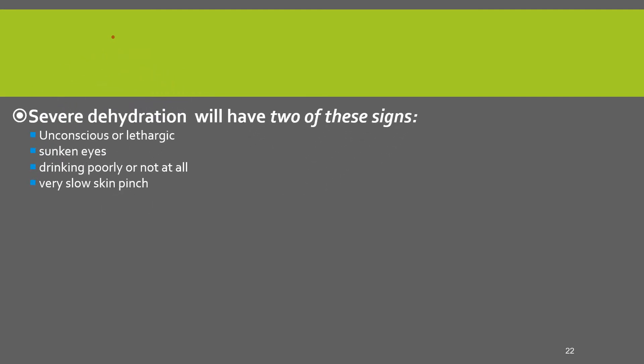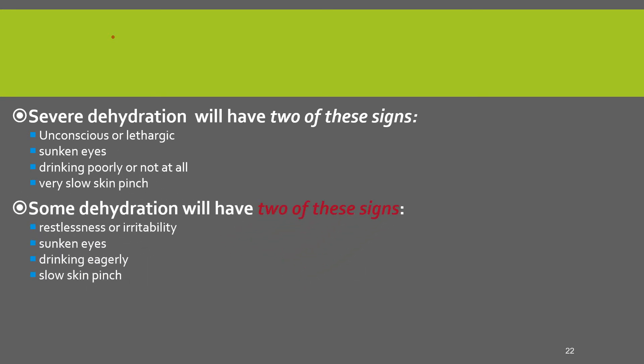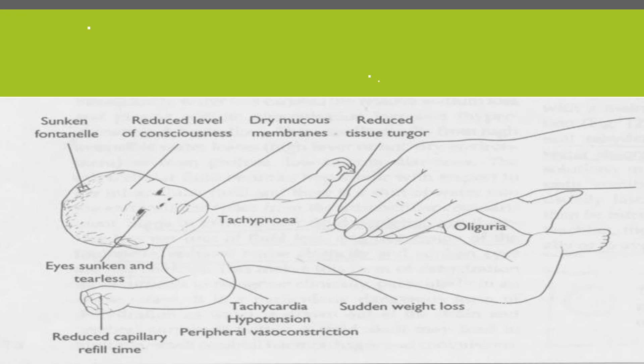We classify dehydration into three: severe dehydration, some dehydration, and no dehydration based on those criteria — we need two out of four signs. Severe dehydration: two signs such as unconscious or lethargic, sunken eyes, drinks poorly or not at all, and very slow skin pinch. Some dehydration: two signs — restlessness or irritability, sunken eyes, drinking eagerly, and slow skin pinch. No dehydration is when there are none of those signs. In addition, we should check for sunken fontanelle, reduced level of consciousness, high fever, tearlessness, capillary refill time, vital signs, recent weight loss, oliguria, and other findings.